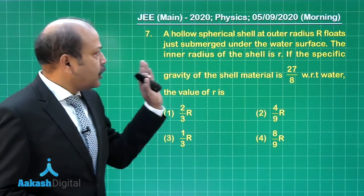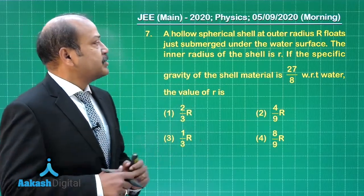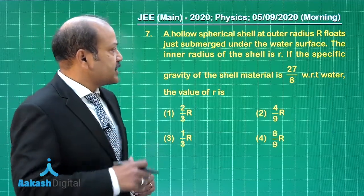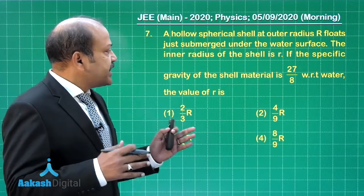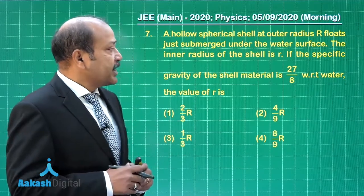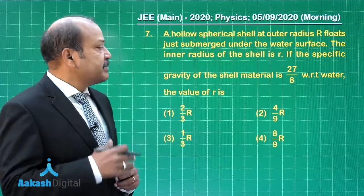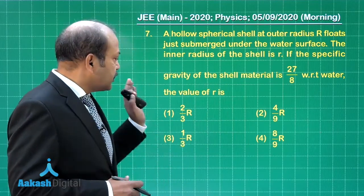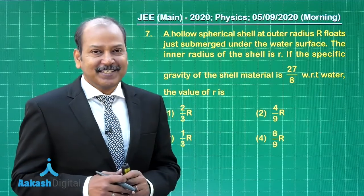Question 7 says a hollow spherical shell at outer radius R floats just submerged under the water surface. The inner radius of the shell is small r. If the specific gravity of the shell material is 27 by 8 with respect to water, the value of small r is.